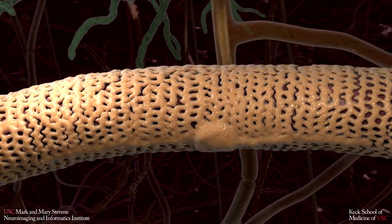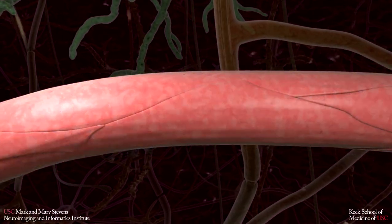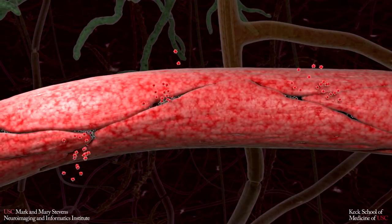This blood-brain barrier dysregulation can occur as endothelial cells degrade, compromising the tight junctions.